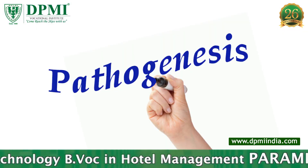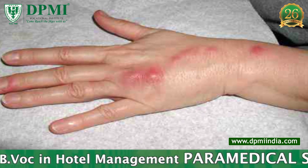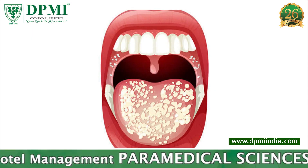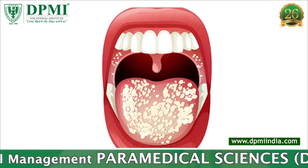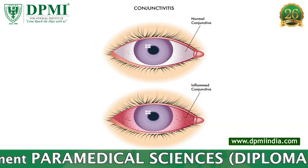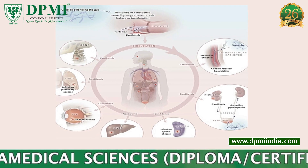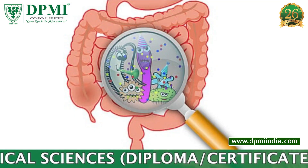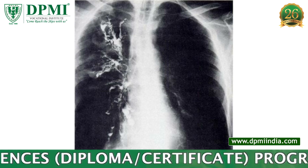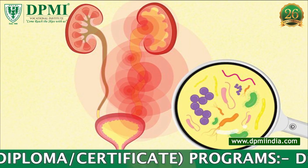Pathogenesis. Superficial candidiasis includes mucocutaneous lesions such as oral thrush and vulvovaginitis, as well as conjunctivitis and keratitis. Systemic candidiasis includes intestinal candidiasis, bronchopulmonary candidiasis, and urinary tract infections.